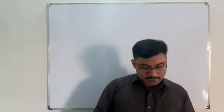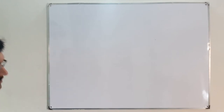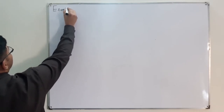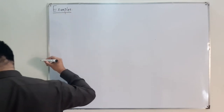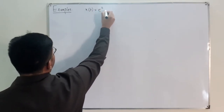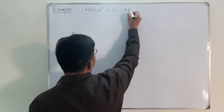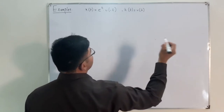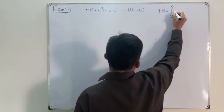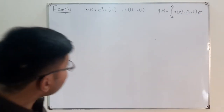Bismillahirrahmanirrahim, assalamu alaikum. This is Allah Khan, continuing the topic of continuous-time convolution in which we started examples from the previous video. So we continue with examples. The first example we take is x(t) = e^t · u(-t) and h(t) = u(t), the unit step function. We want to find y(t), which is given by the convolution integral from negative infinity to positive infinity of x(τ) · h(t - τ) dτ.